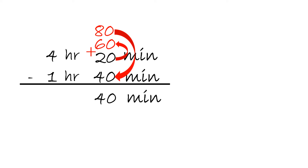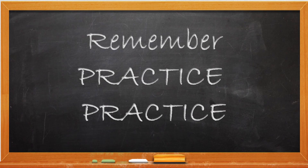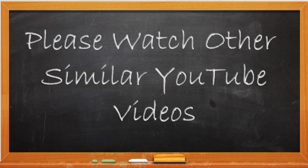Now, on the left side, the 4 hours — since we added 60 minutes to the minutes side, we're going to subtract something equivalent to 60 minutes, which is 1 hour. So we subtract 1 hour: 4 minus 1 equals 3. Then 3 minus 1 will equal 2. The answer is 2 hours and 40 minutes.